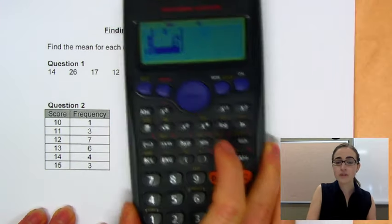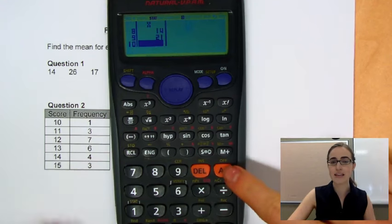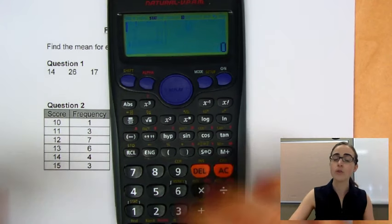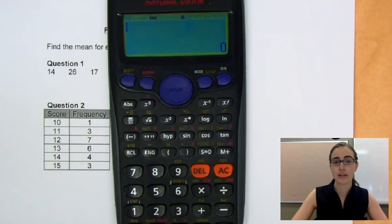So we have all of our scores in there now. We're just going to press this AC button to get out of there. All that data is still stored in the memory of our calculator.